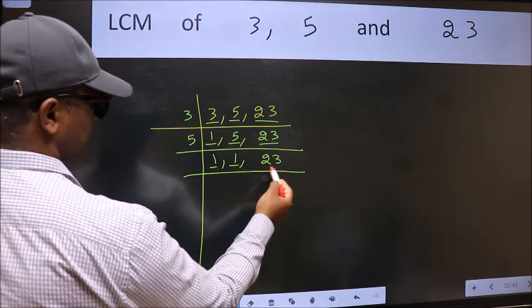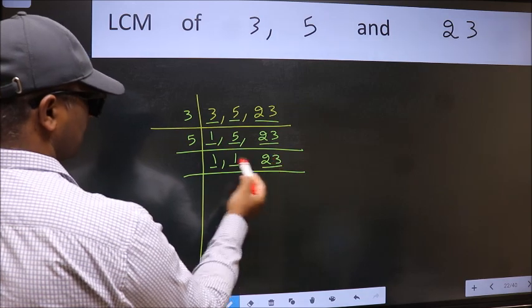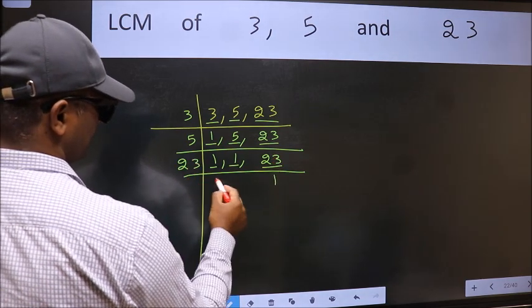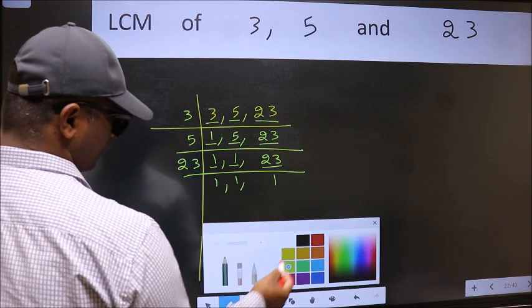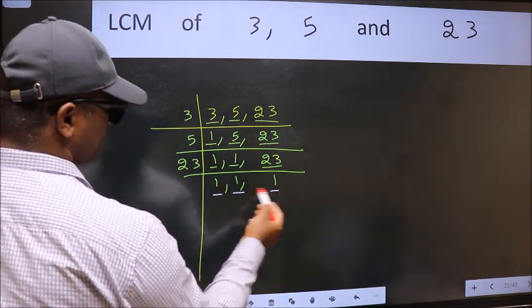So focus on the next number 23. 23 is a prime number so 23 divides 23. So we got 1 in all the 3 places.